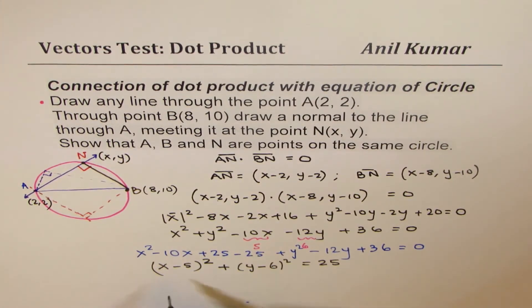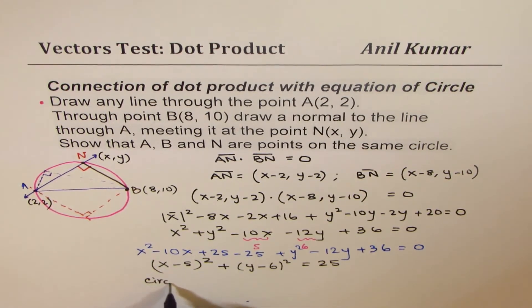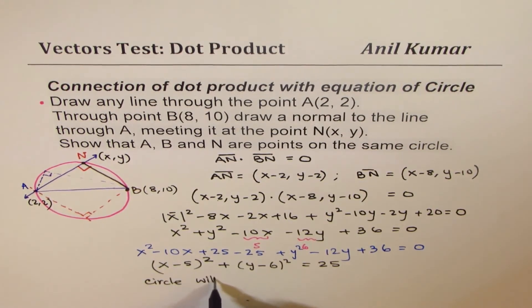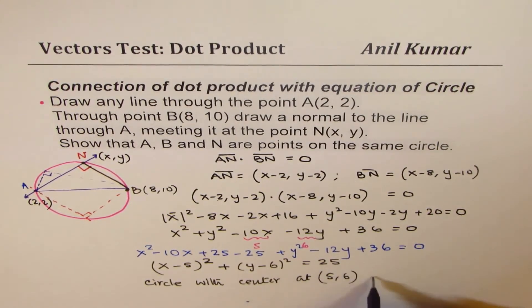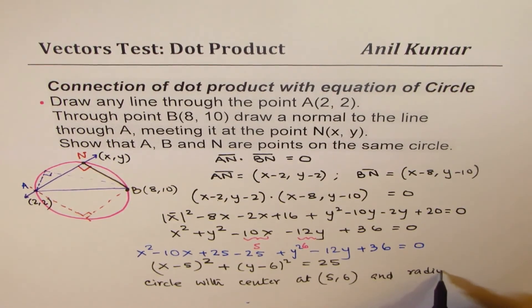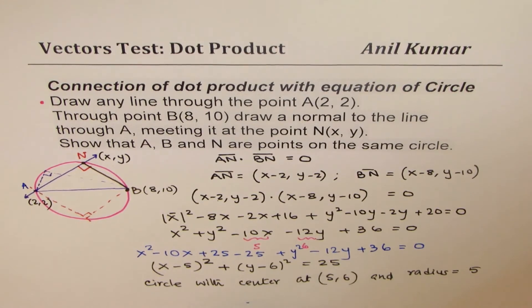So we have a circle. That is a circle with center at 5, 6 and radius equals to 5. Square root of 25. Radius equals to 5.